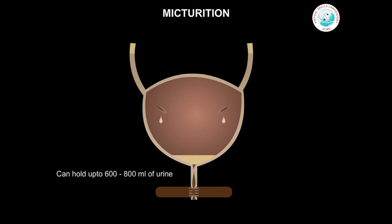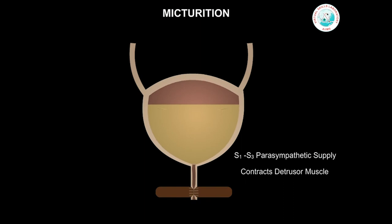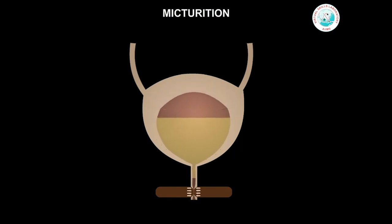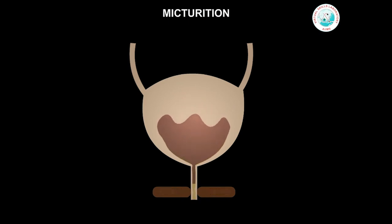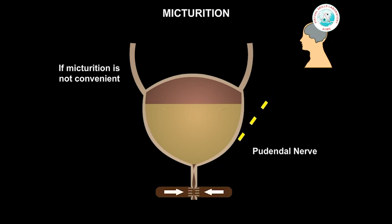Now let us understand how micturition occurs. A normal bladder functions through a complex coordination of muscular, neurologic and psychological functions. The bladder neck has two sphincters: an internal sphincter that works under the autonomic nervous system and an external sphincter that is under voluntary control. Our bladder can hold up to 600–800 ml of urine. When the volume reaches around 400 ml, it is perceived as a sensation of fullness and a desire to micturate. Parasympathetic supply coming from the sacral region of the spinal cord contracts the detrusor muscle. The internal urethral sphincter relaxes, followed by the external urethral sphincter, thus causing micturition. If micturition is not convenient, impulses are sent from the brain through the somatic motor neurons via the pudendal nerve that keep the external urethral sphincter contracted, thus holding the urine.